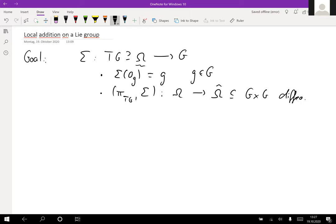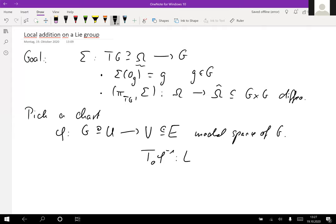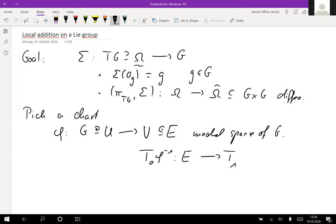Pick a chart phi from U, an open subset of G, to V sitting inside E, the model space of the Lie group G. We know that E is isomorphic to the tangent space at the identity, basically given by T_0 phi inverse, which is an isomorphism from E to the tangent space at the identity.